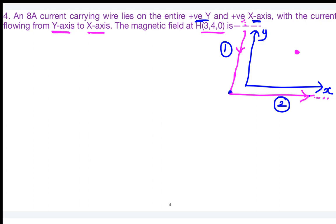The problem is split: one semi-infinite wire from infinity on the positive y-axis to the origin, and another from the origin to infinity on the positive x-axis. The magnetic field intensity at the observation point is the sum of contributions from both elements. The first part will be solved here; the second is left as an assignment.